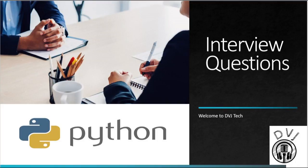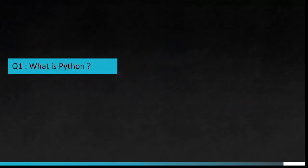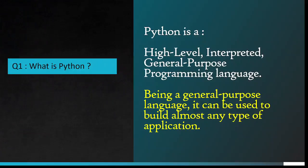Top 50 Python Interview Questions and Answers. Hey guys! Welcome to DVJ Tech. Number 1: What is Python? Python is a high-level, interpreted, general-purpose programming language. Being a general-purpose language, it can be used to build almost any type of application.